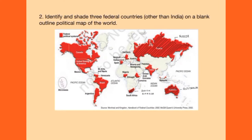Federal countries are those which show vertical division of power — that is, power is divided and shared at the central level and state level. Out of 193 countries in the world, only 25 practice federalism. These countries make up about 40% of the world's population. Most of the world's large countries practice federalism, such as India, Russia, Brazil, Canada, and the United States of America.